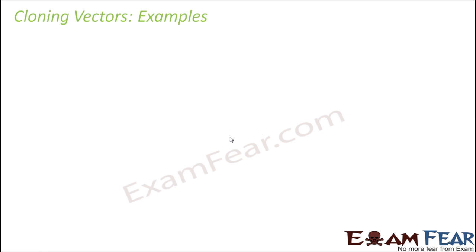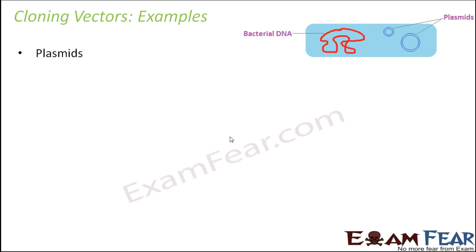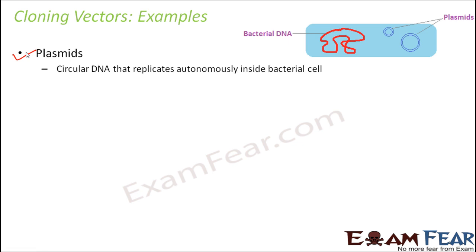Now let us talk about some examples of cloning vectors. One very common example is the plasmid. Plasmid is a circular DNA that replicates autonomously inside bacterial cells. In a bacterial cell, you have the chromosomal DNA, and other than that, you have circular DNA molecules — plasmids — which are independent of the bacterial DNA. These plasmids can independently replicate themselves and are not dependent on the chromosome in any way. This is one feature why plasmid DNA acts as a vector.